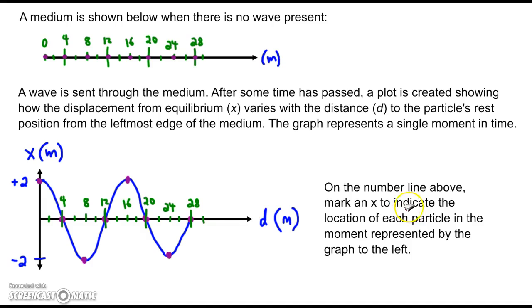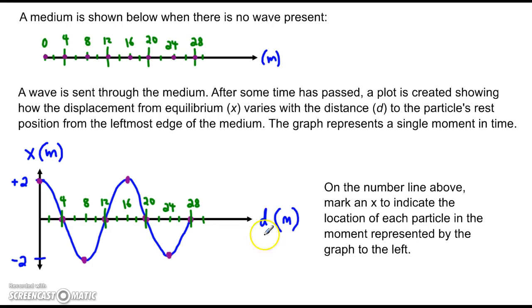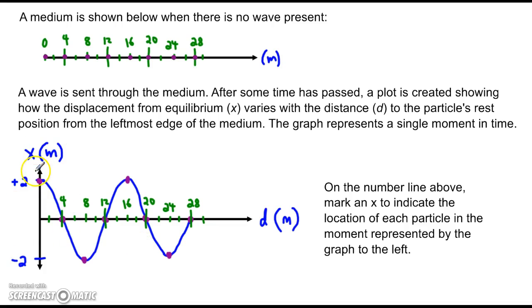The problem says: on the number line above, mark an X to indicate the location of each particle in the moment represented by the graph. So we are going to draw the medium using X's based on the graph's information. The x-value on the graph represents the center position or resting position of the particle. The y-value represents how far it's been pushed left or right — positive is to the right, negative is to the left.